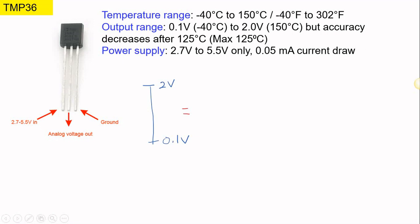Please bear in mind that even though the ADC ranges from 0 to 5 volts, according to the datasheet this sensor only operates between 0.1V and 2V, which is equivalent to minus 40°C to 150°C. Each voltage step resolution — the smallest voltage for bit changing — is 10 millivolts per degree Celsius.